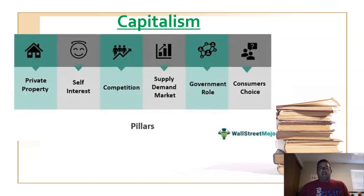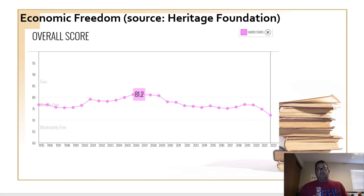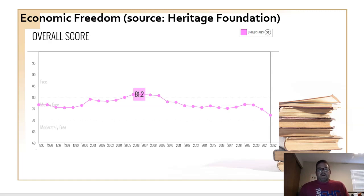Before we dive into that, I want to address a common assumption — that the United States is a capitalistic country. That's not altogether incorrect; however, it's not altogether accurate either. One of the hallmarks of capitalism is economic freedom. The United States definitely has capitalistic elements, but for our purposes, it's really a mixed economic system — a combination of capitalism and socialism, though it's more capitalistic than socialistic.